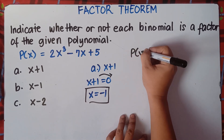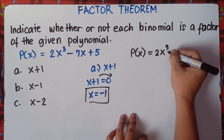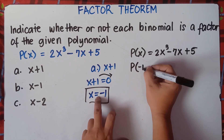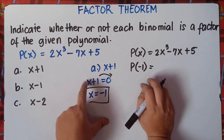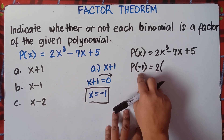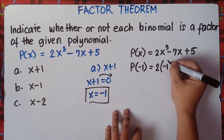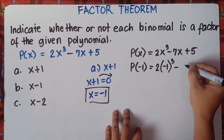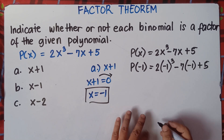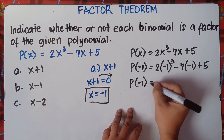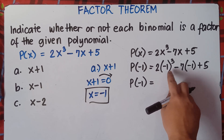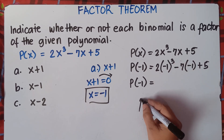So we write P(x) equals 2x³ minus 7x plus 5. This will be P(negative 1). We are answering letter A, so P(negative 1) equals 2 times (negative 1) cubed minus 7 times (negative 1) plus 5. Remember class, always follow PEMDAS. Do not multiply 2 and negative 1 — it should be parenthesis, then exponent first.